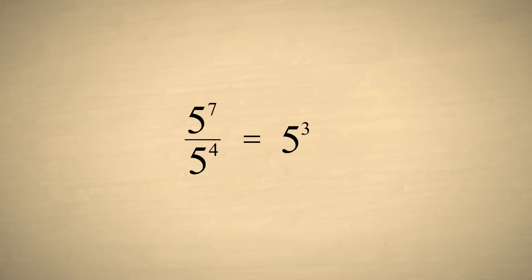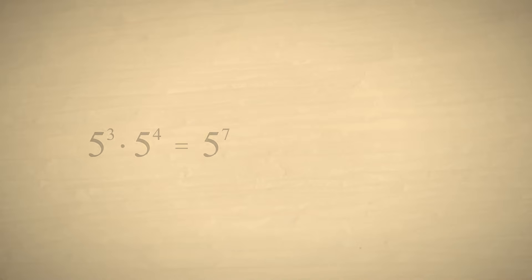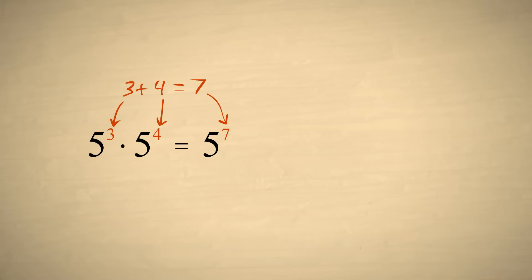Notice that we can get this result by subtracting the exponent of the denominator from the exponent of the numerator. So to multiply exponential expressions with the same base, add their exponents. And to divide exponential expressions with the same base, subtract their exponents.